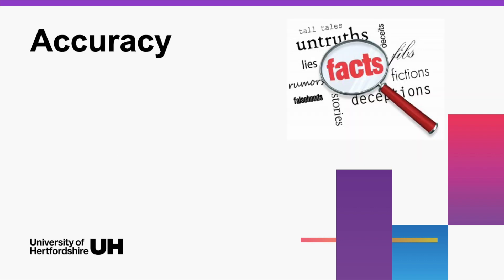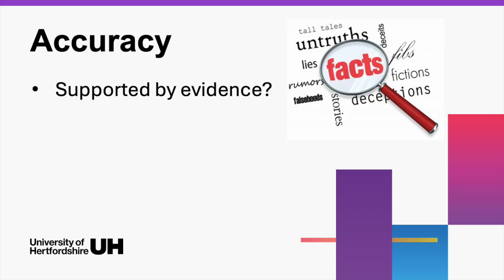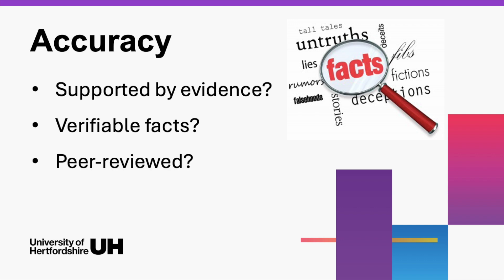Fourth, accuracy. Is the information supported by evidence? Can you verify the facts? Check if the information is backed by data, research, or references to other credible sources. Accurate information is often peer-reviewed, cited by other scholars, and free of errors.